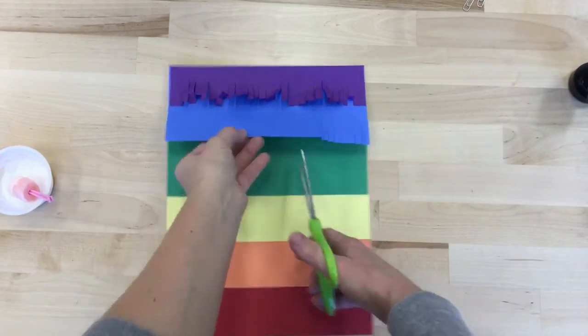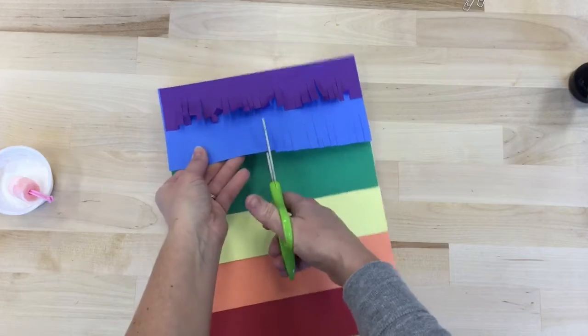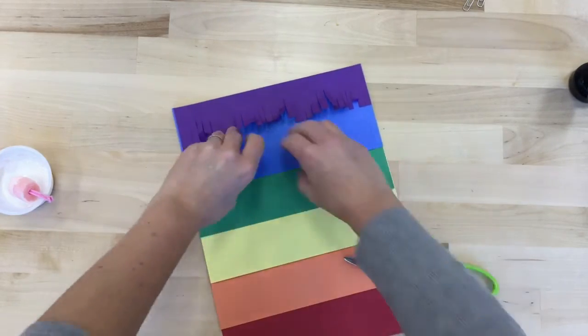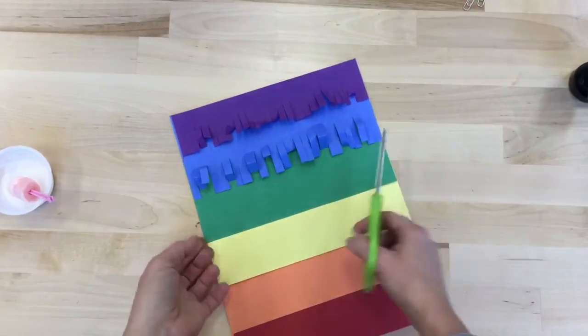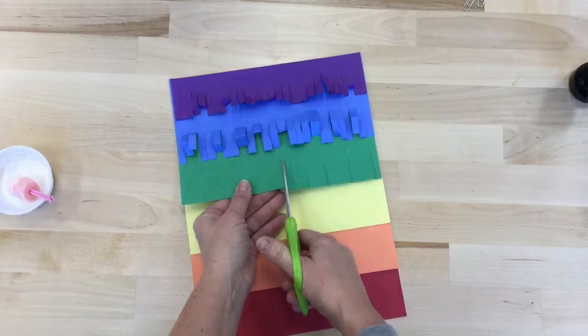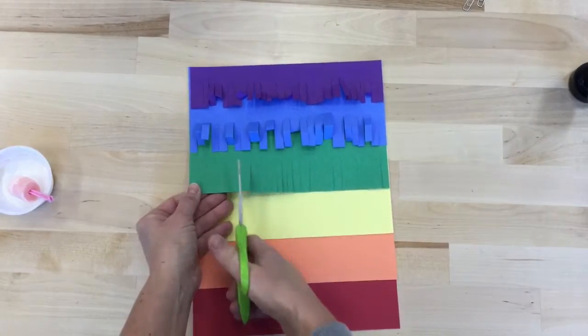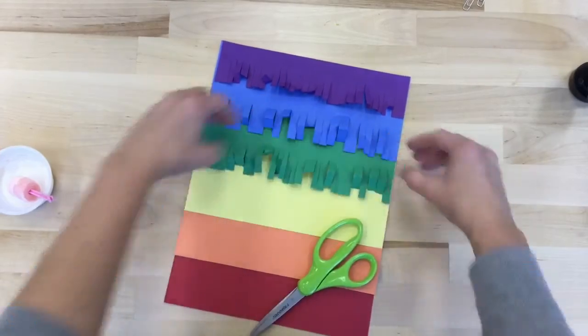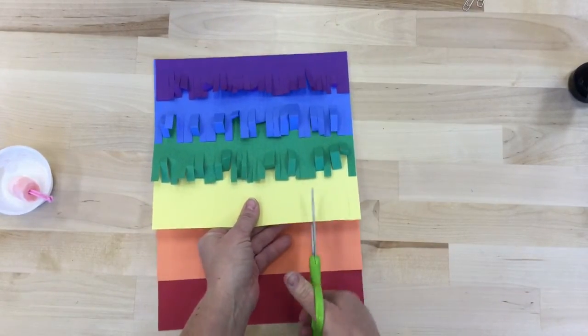And of course, this wouldn't be called rainbow fringe if we didn't have every color fringed. So cut away. You can begin cutting any color you'd like first. Once you've cut, you can crunch them up and make them look more interesting. Make sure your name is on the back, and this is your fringe to keep.